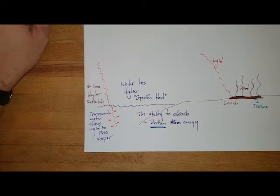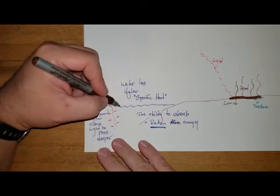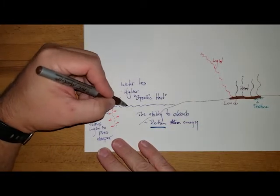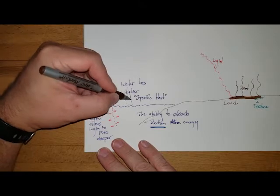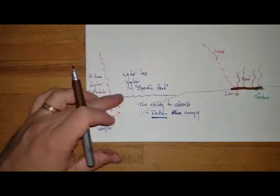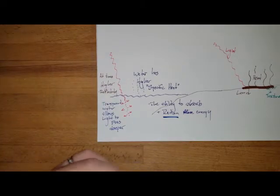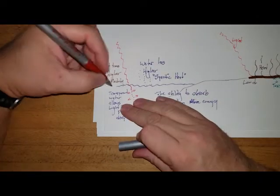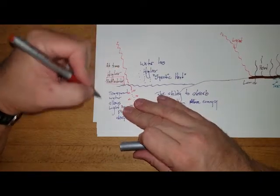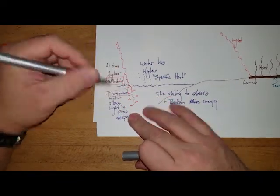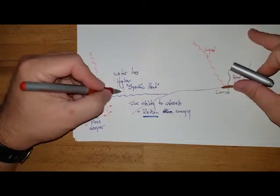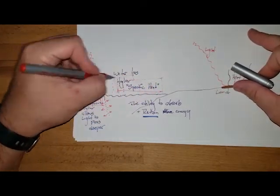It doesn't radiate it off as heat energy as much - it's going to be less heat energy radiating off the surface because that water stores it. So the reflectivity is going to be one thing that influences this, the transparency of the water, the higher specific heat of the water.